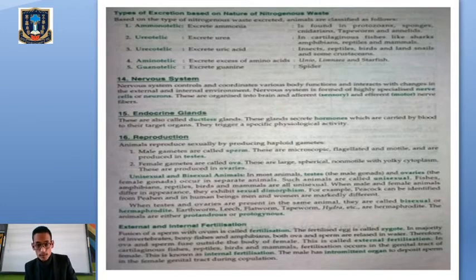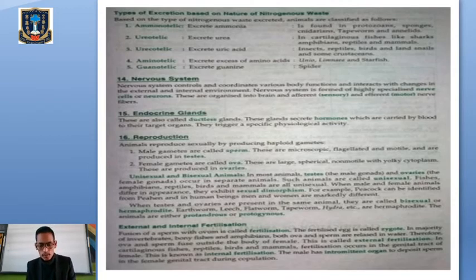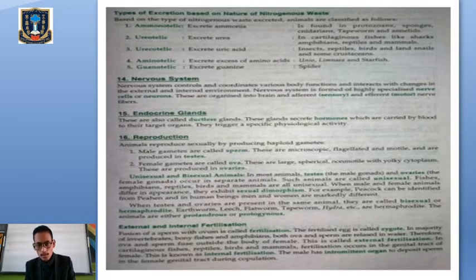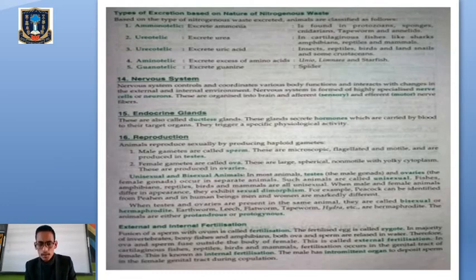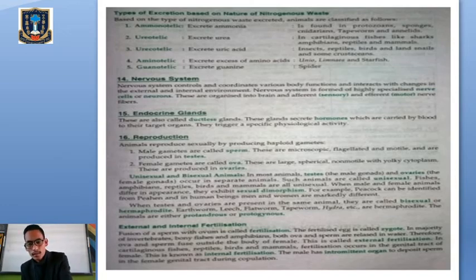In internal fertilization, fertilization takes place within the genital tract of the female body. The male deposits sperm in the female's genital tract during copulation. Internal fertilization has more advantages than external fertilization because in external fertilization, eggs and larvae can be preyed upon by predators, reducing offspring survival. In internal fertilization, the mother provides complete protection to the offspring, giving greater chances of survival.